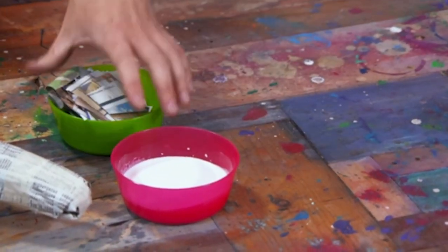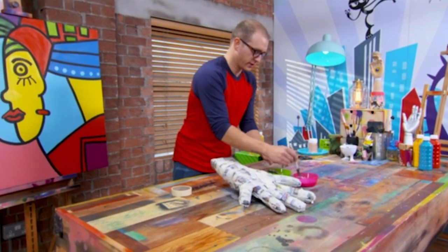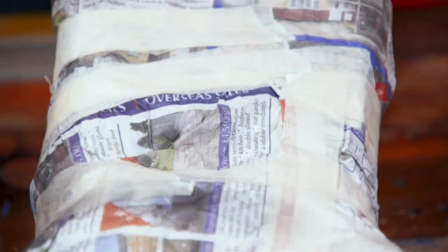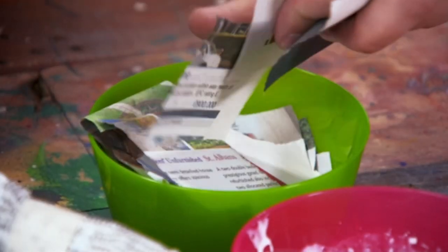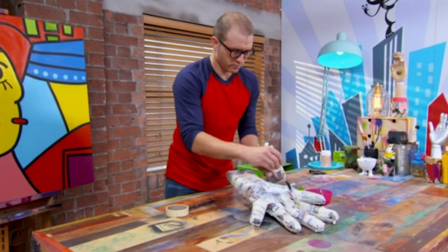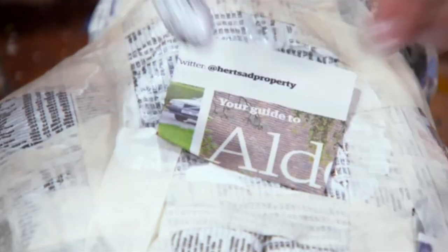Right, so held down nice and tight, ready for paper mache. So I've got some mix here, two parts glue, one part water, and some little squares of newspaper. I'm going to give it a good generous cover. It needs maybe two or three layers of this just to stiffen it up, make it nice and strong ready for painting. It's messy but so relaxing to do.